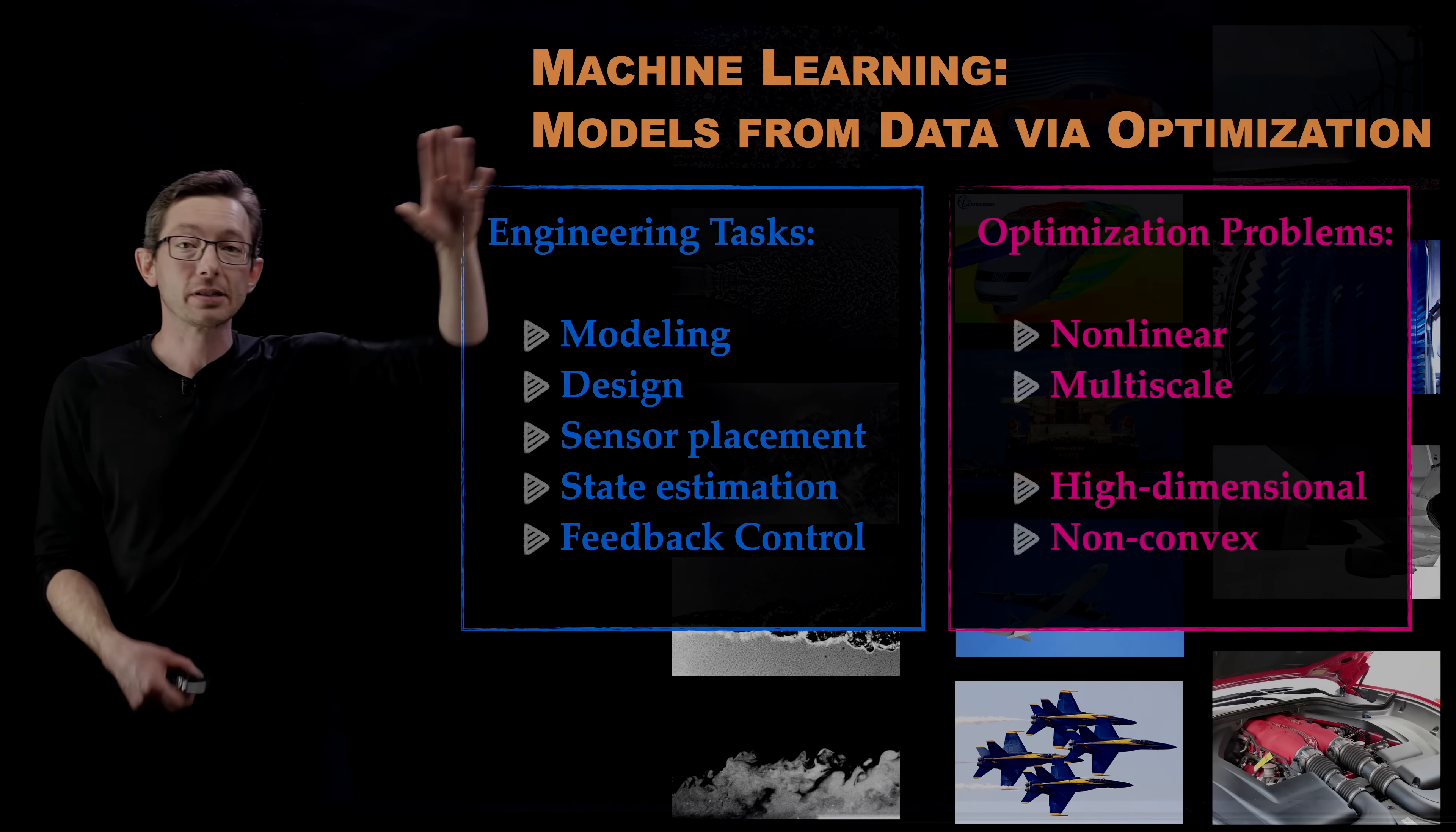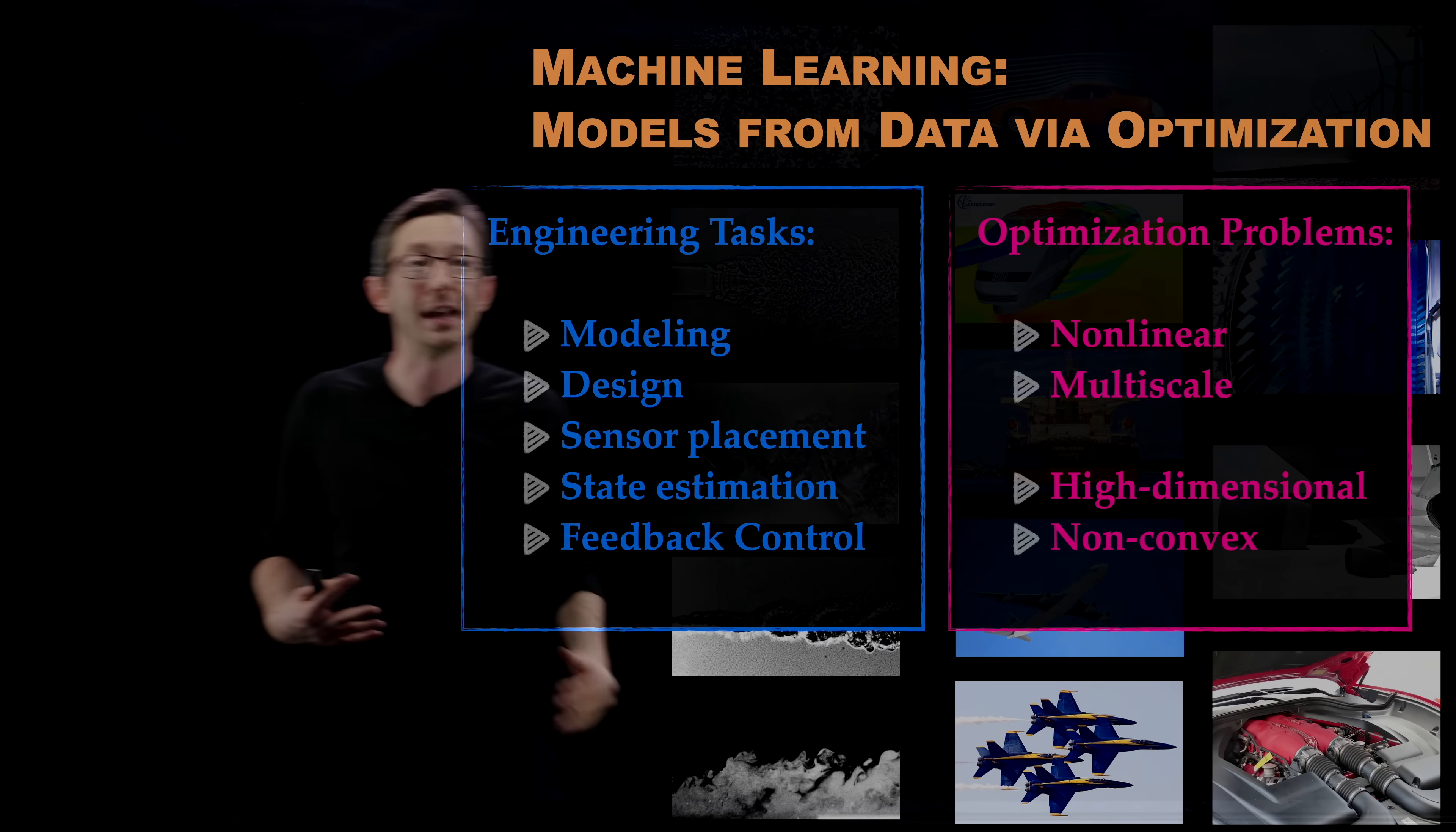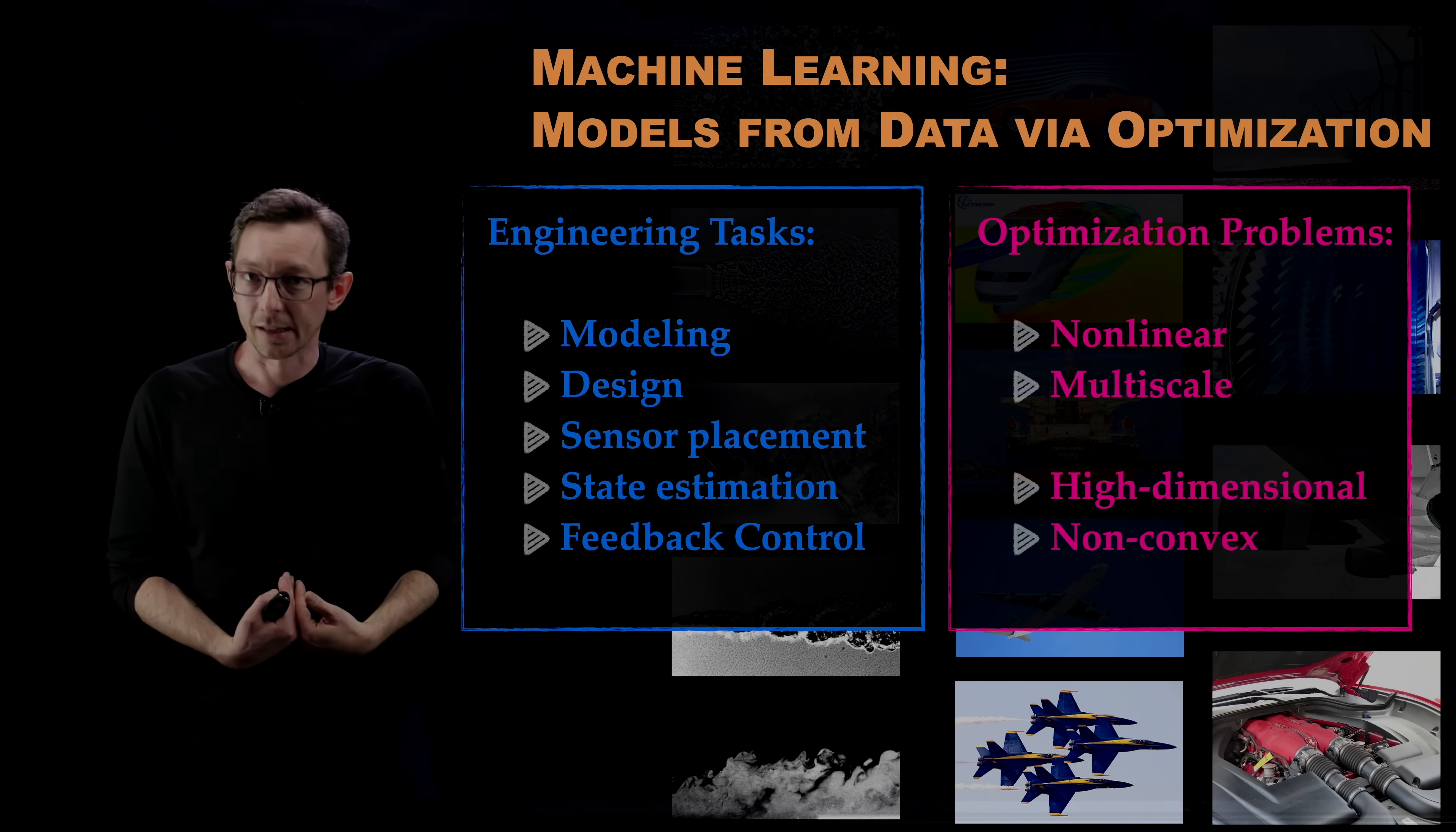We've been building models from data for decades, so this is something that we understand how to do. Even though machine learning is new and interesting because we have so much more data and better optimization algorithms and more representative and flexible models like neural networks that we can finally train on high-performance computing architectures, the idea of building models from data is something that makes sense to us.